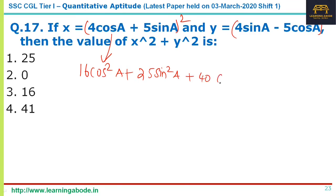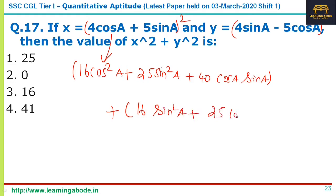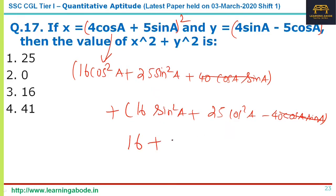The next expansion gives 16 sin²A + 25 cos²A − 40 cos A sin A. The 40 cos A sin A terms cancel. Using cos²A + sin²A = 1: 16(cos²A + sin²A) = 16 and 25(sin²A + cos²A) = 25. So 16 + 25 = 41, answer option 4 for question number 17.